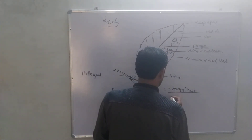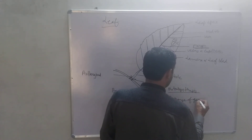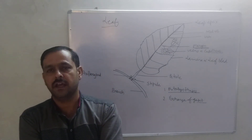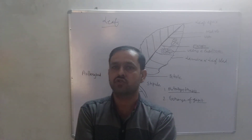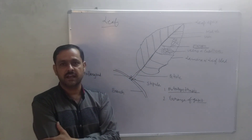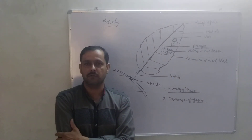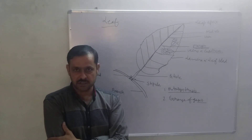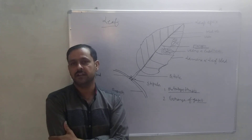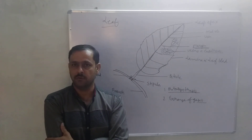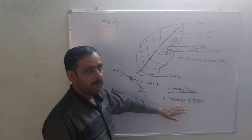Second, the function of leaf is exchange of gases. When we see the internal structure of the leaf, we find its epidermis has many stomata. By these stomata, the leaf can exchange gases. As we know, we need oxygen to survive, and oxygen is produced by the leaf with the help of photosynthesis and is released into the outer environment. The leaf can also absorb or take in carbon dioxide from the environment. So exchange of gases happens by the leaf.